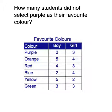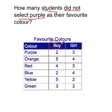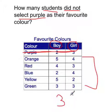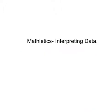Try this one by yourself: how many students did not select purple as their favourite colour? Pause the video now. Again, we're looking at 'students' and 'did not select purple'. Because we're looking at students we're going to look at both boys and girls. Did not select purple, so let's cross out purple. We're going to add up all the rest of the numbers, and I hope you got the answer 35 — if you did, that's correct. You can go into Mathletics now and complete the task on interpreting data.